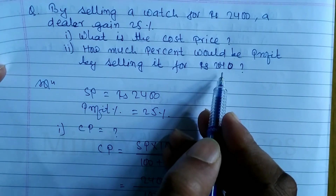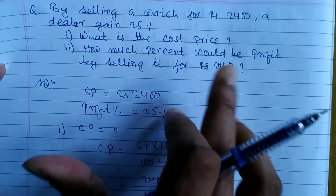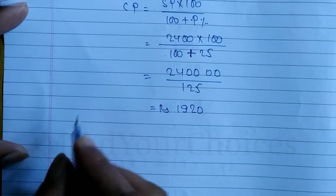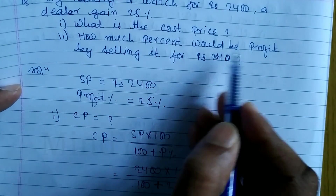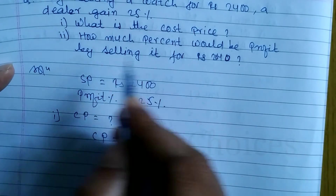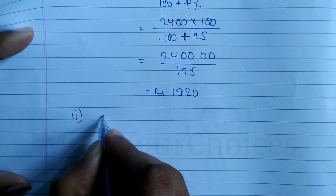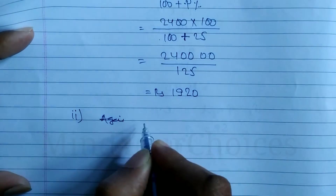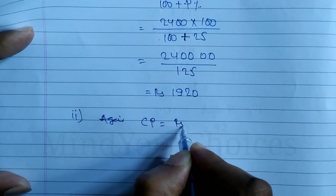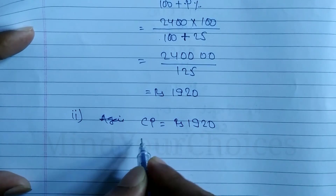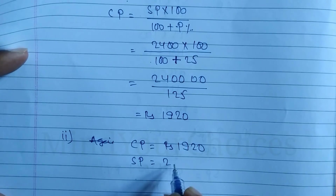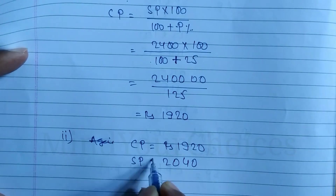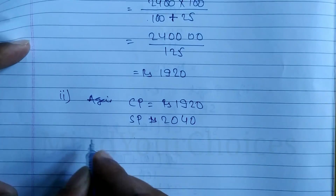Next question: how much percent would be profit by selling the watch for Rupees 2040? Now if we sell at 2040, what profit percent do we get? The cost price remains the same — it does not change. The selling price SP is now 2040. We need to find the profit percent.